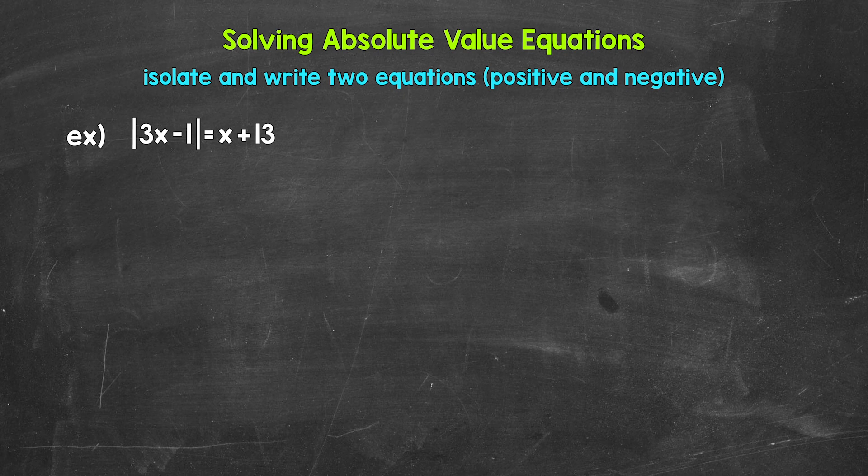Let's jump into our example where we have the absolute value of 3x minus one equals x plus 13. When we have an absolute value equation with variables on both sides, we still solve it the same way as any other absolute value equation. We isolate the absolute value, and then we write two equations.